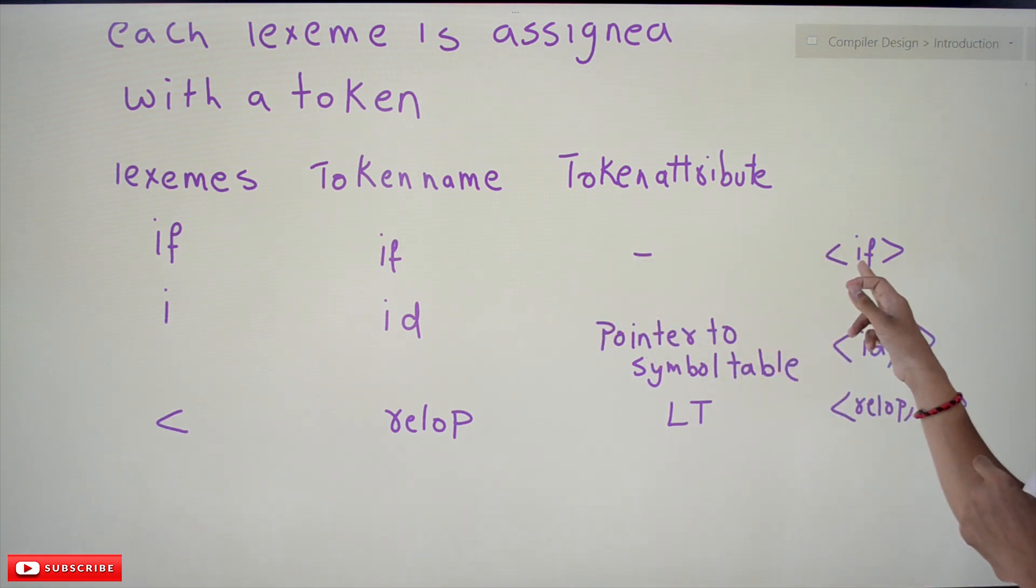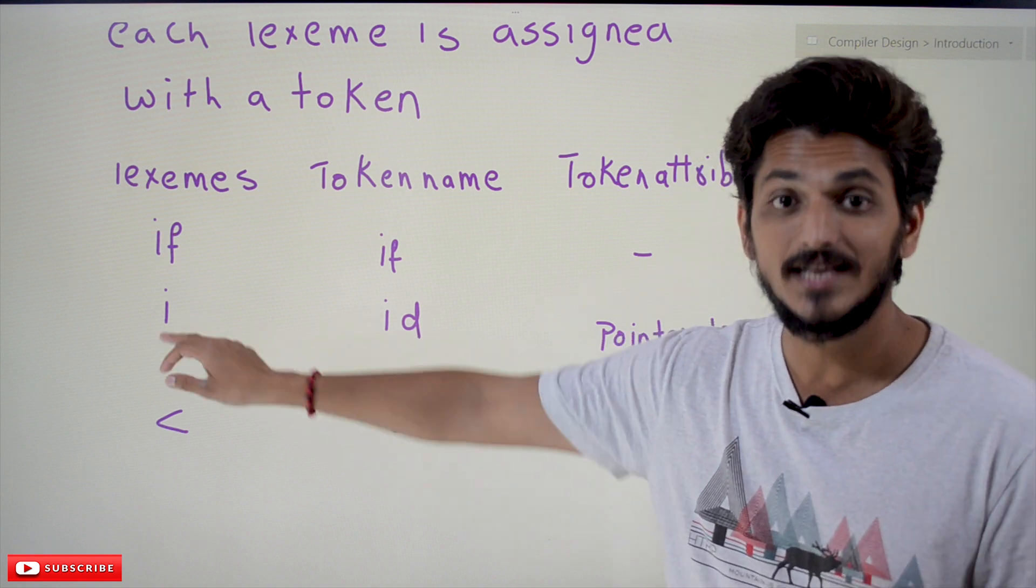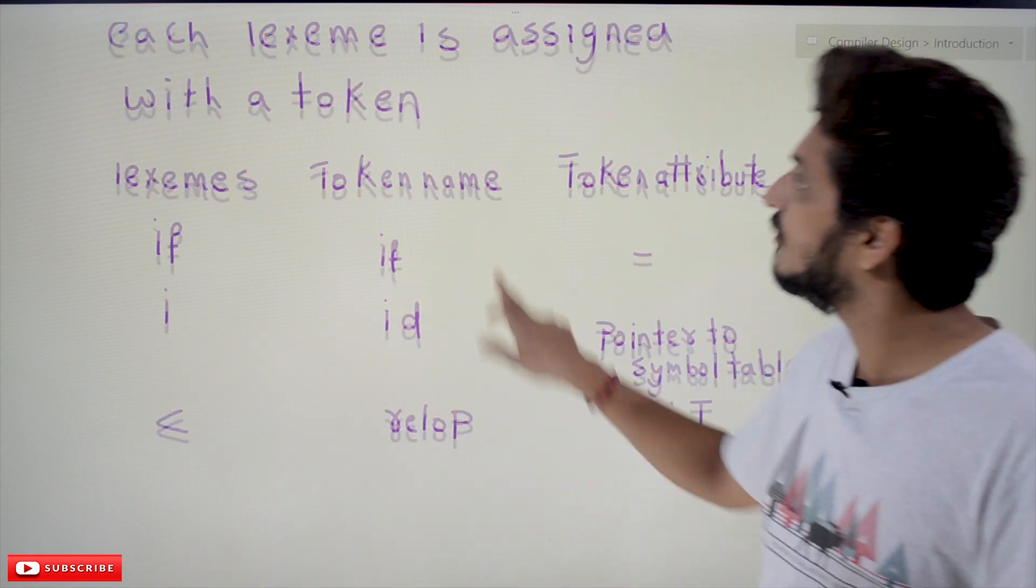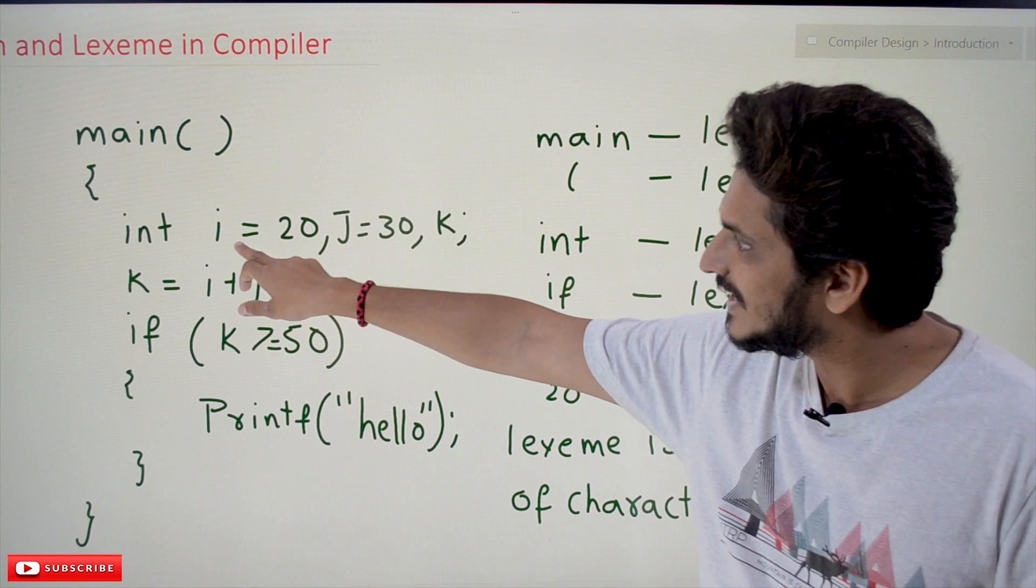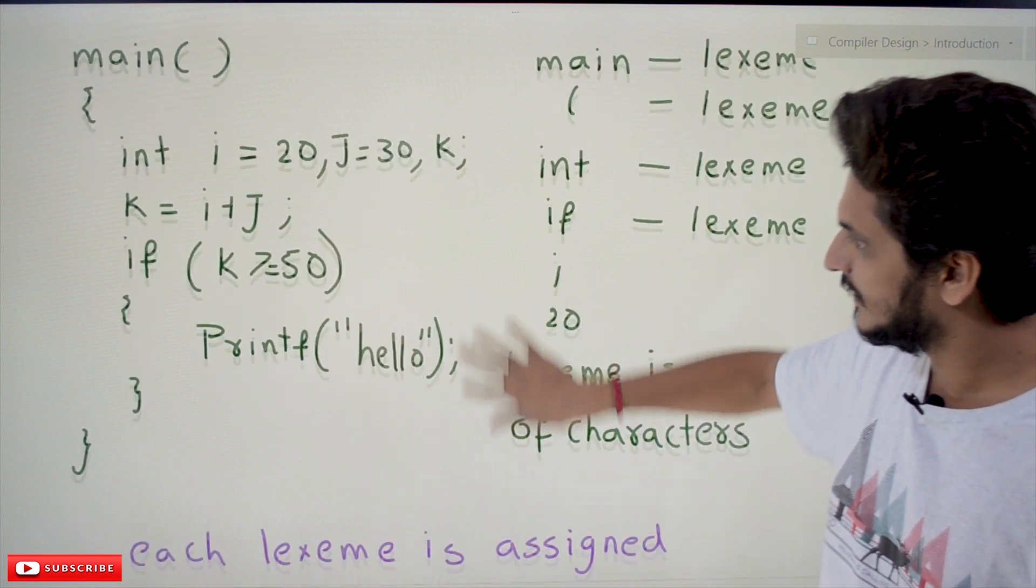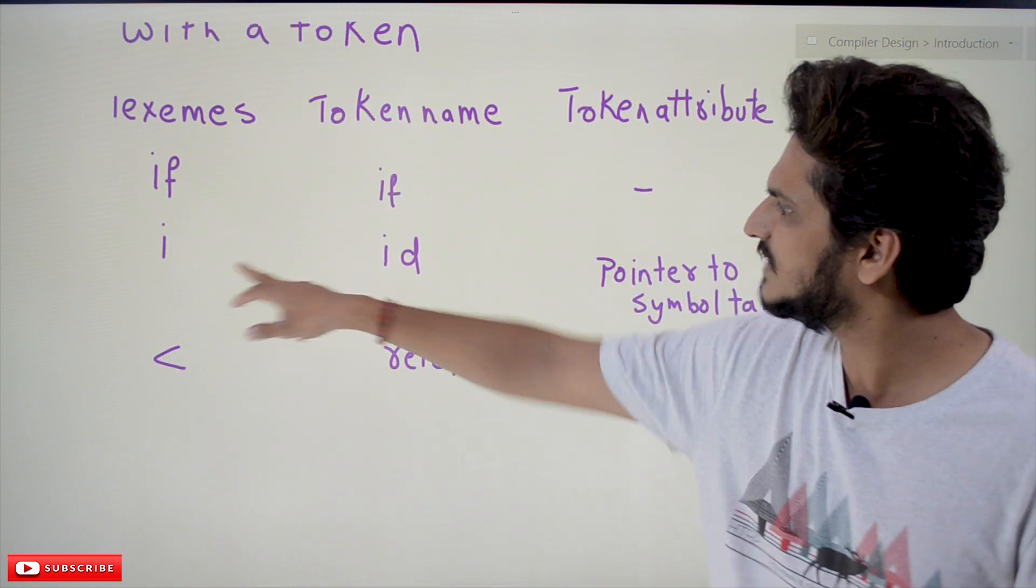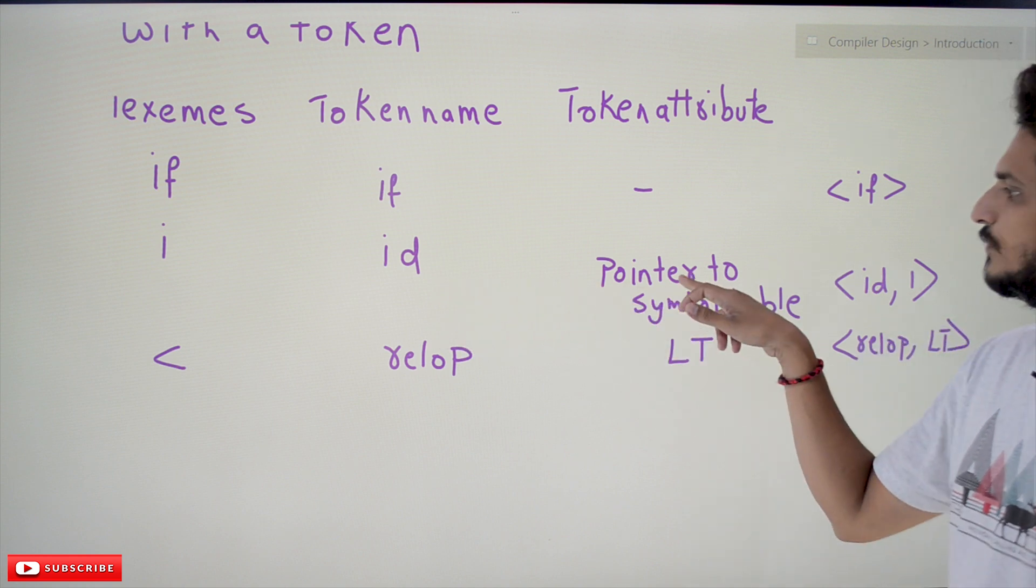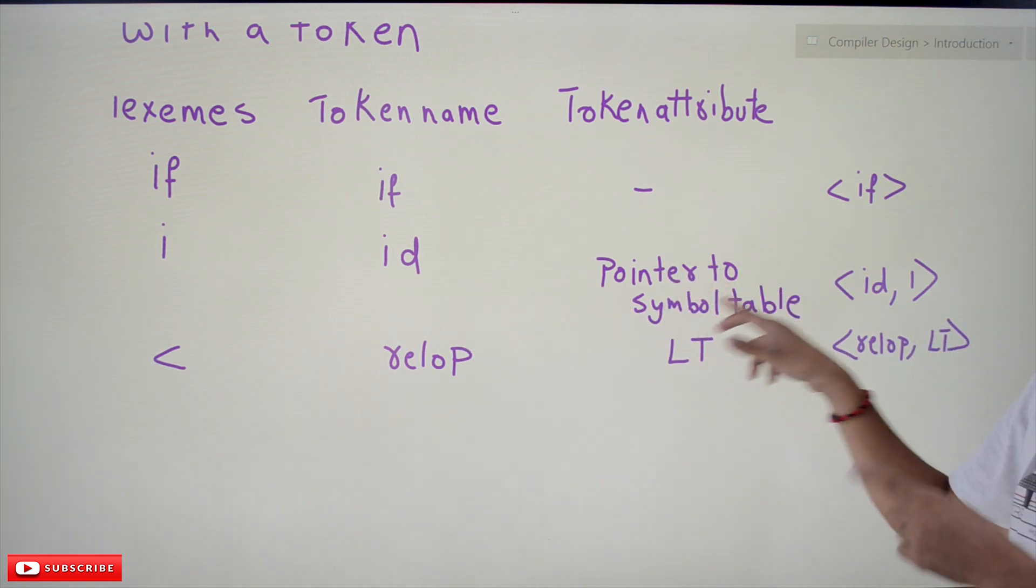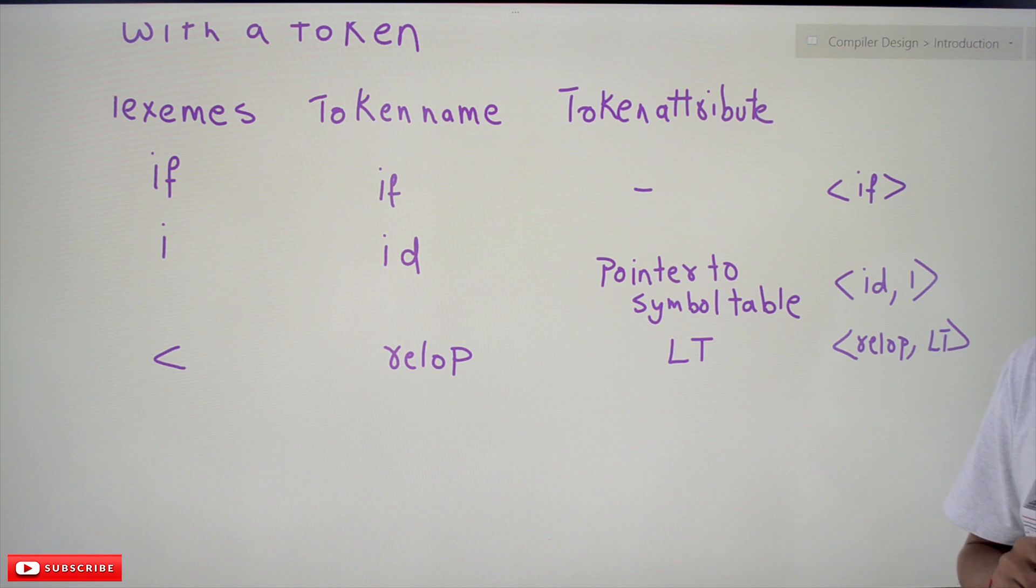If you find 'i', 'i' is an identifier in our program. The token name for 'i' is 'id' and we have to provide the attribute value as pointer to symbol table. That's why the token is provided like this: id, it is placed in the symbol table in the first location, id comma one.